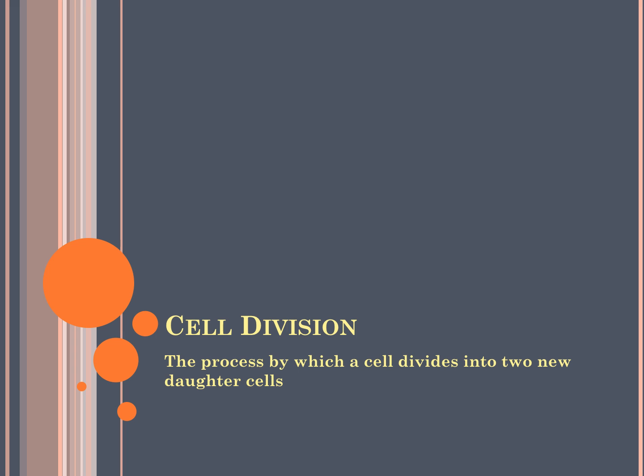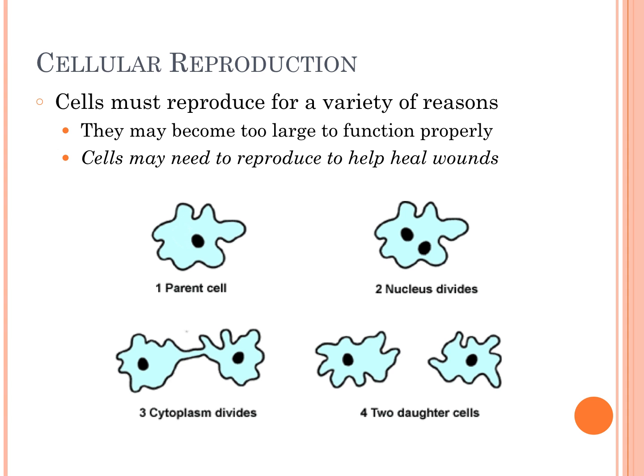Cell division is defined as the process by which a cell divides into two new daughter cells. Cells have to reproduce for a lot of different reasons.